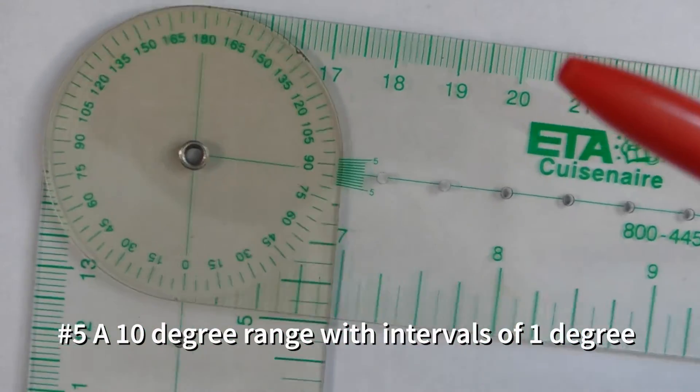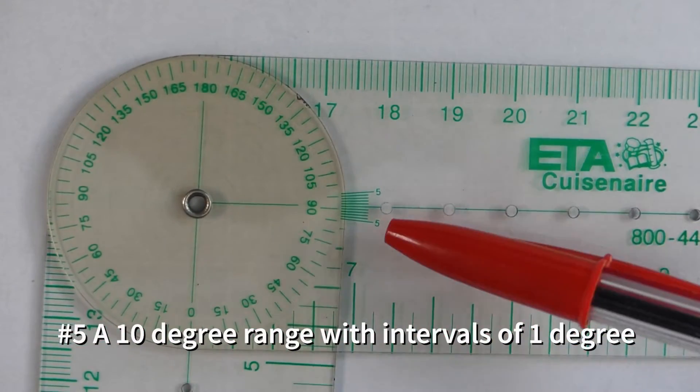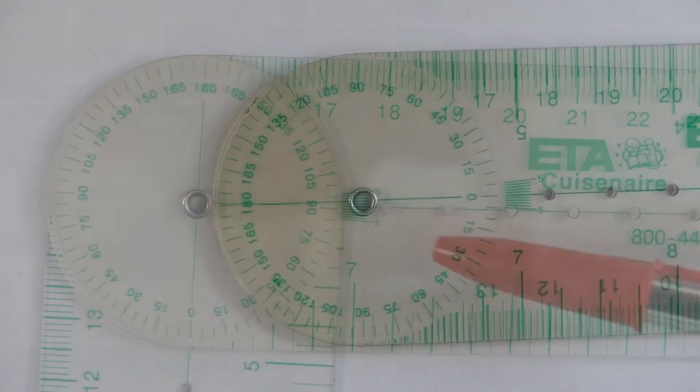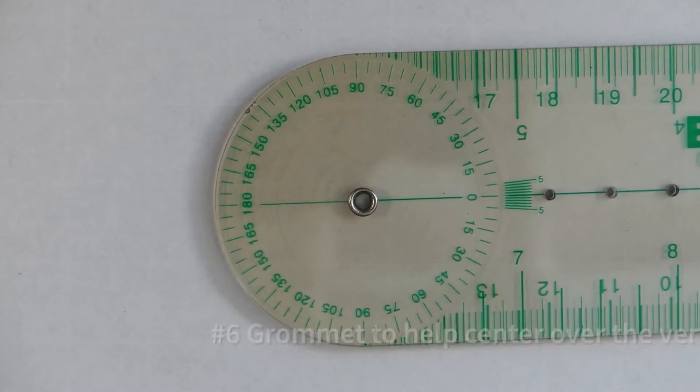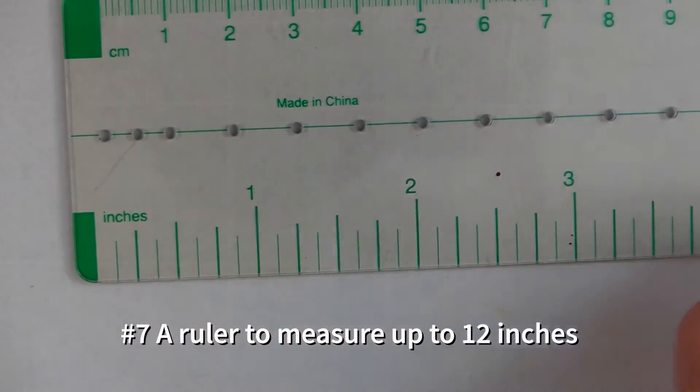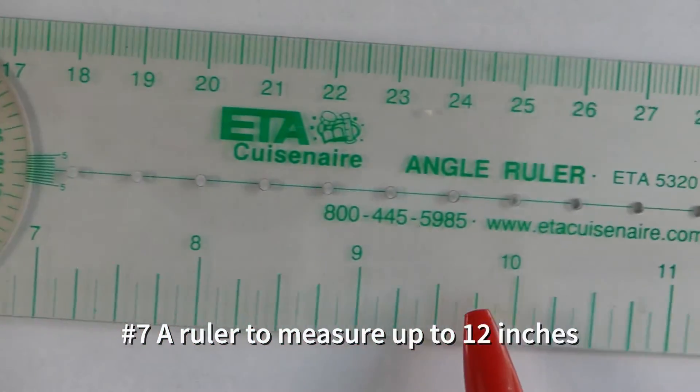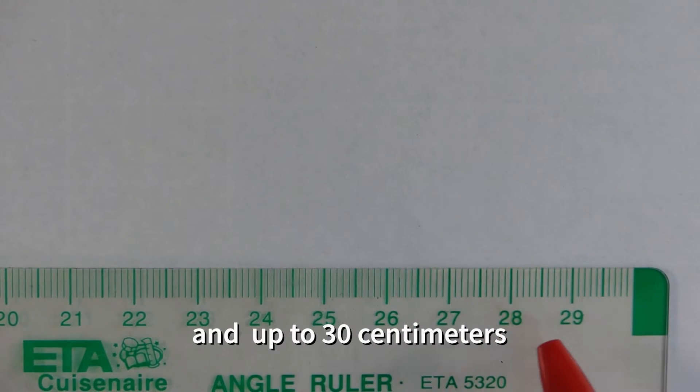The little range here of 10 degrees, that's going to help us get a very accurate measurement when measuring angles. The grommet is nice as far as putting over top of the vertex of an angle, and we also can measure with the angle ruler. So we can measure up to 12 inches, or we can measure up to 30 centimeters. So it's kind of a nice little extra feature.